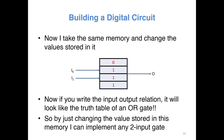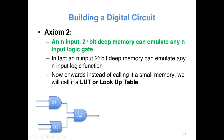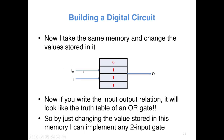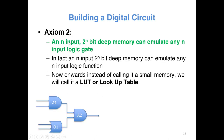The same memory can emulate different kinds of gates simply by changing the content of the memory. In fact, this memory can emulate any two-input gate. The second axiom states that an N-input, 2^N bit deep memory can emulate any N-input logic gate. If you have N address bits, the total depth of the memory is 2^N, and each location is one bit, so the total memory is 2^N bits. It can emulate any N-input logic gate. Extending this, any N-input memory can emulate any N-input Boolean function.